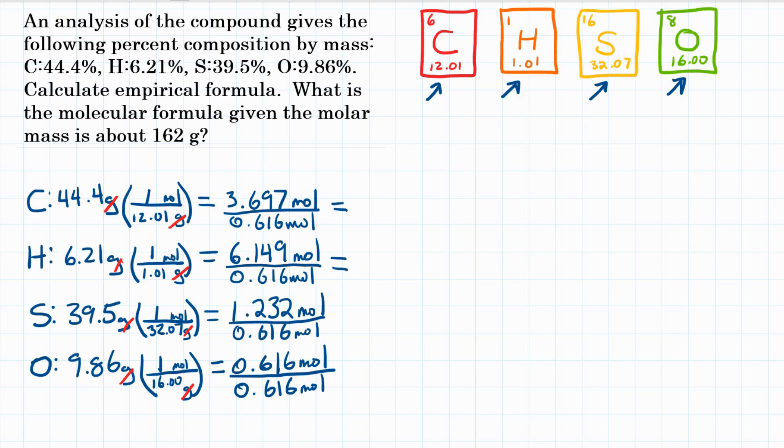Okay, so when we solve these, oxygen is going to be easy. It's exactly 1 because we're dividing it by itself. The rest should be close to a much better number. Generally, they're whole numbers. So 3.697 divided by 0.616 is right about 6. Okay, about 6.001, we're going to call that 6.